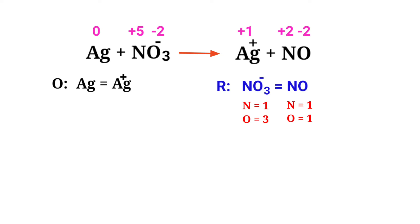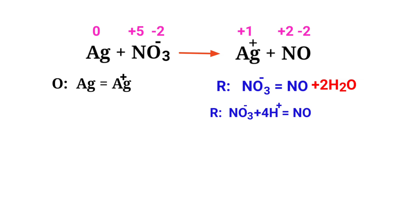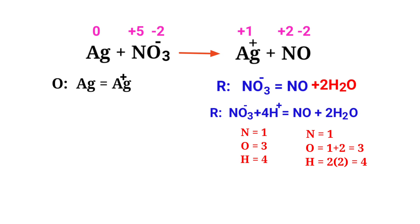In the reduction half reaction, to balance the oxygen atoms you can add water molecules. The oxygen atoms are now balanced. To balance the hydrogen atoms, you can add H⁺ ions. Now the number of atoms are balanced in the reduction half reaction.